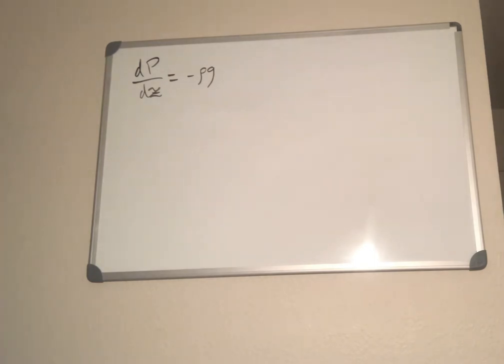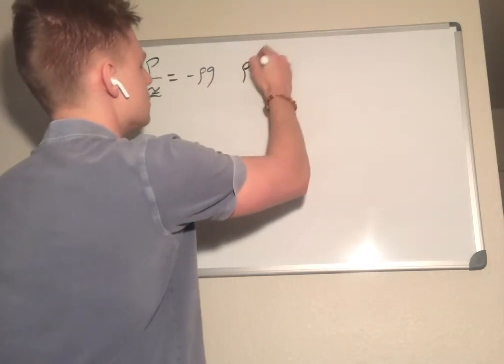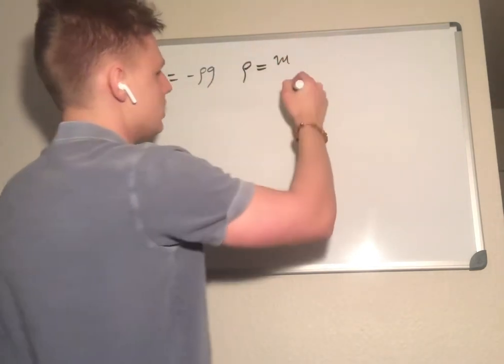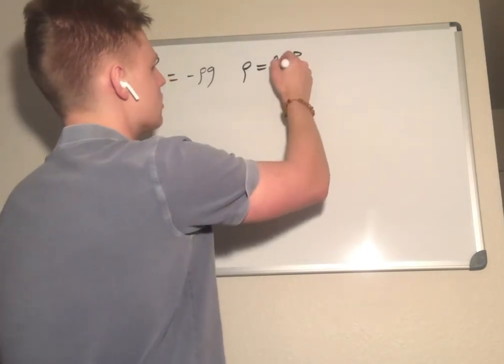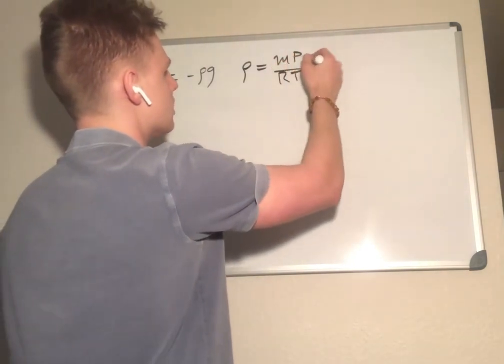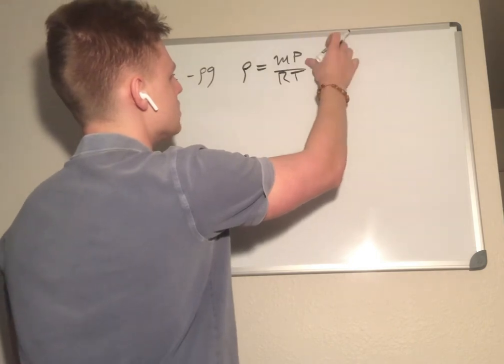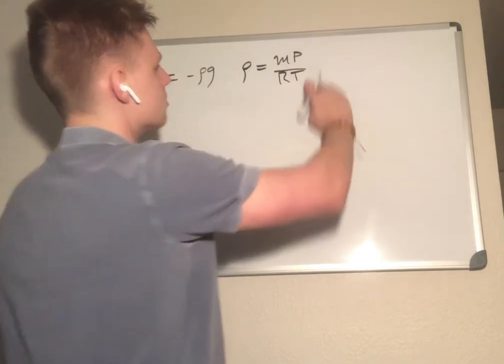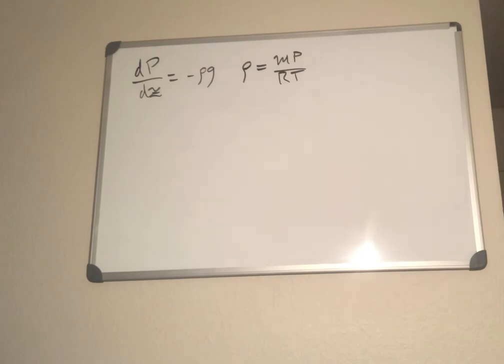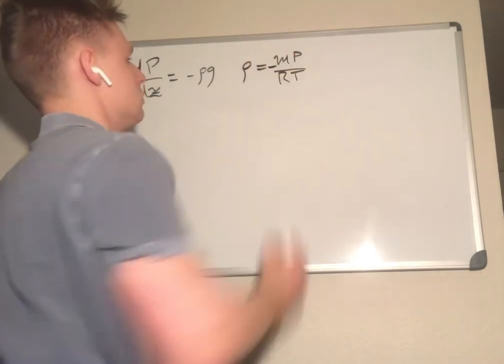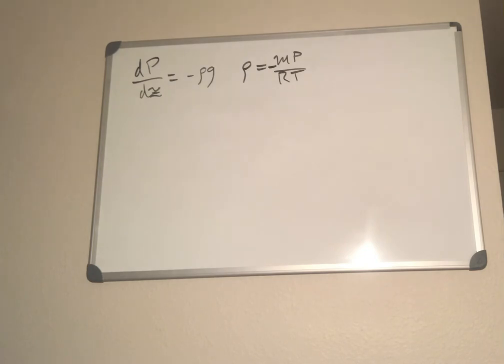For an ideal gas, rho is equal to mp over rt. So multiply by negative 1. Where m is the molar mass and r is the universal gas constant.